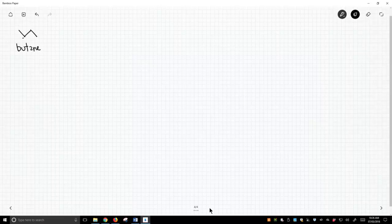For butane, we're going to look down carbon two and three. So we're going to treat this much like ethane, except on the carbon-carbon bond, instead of having a hydrogen on both ends, we're going to have carbons on both ends.